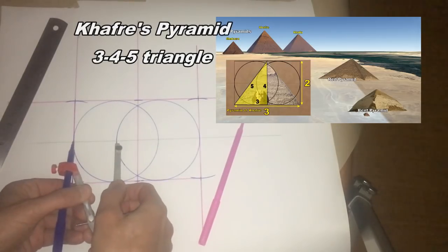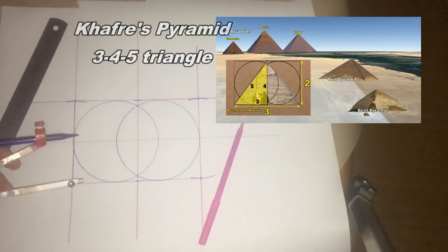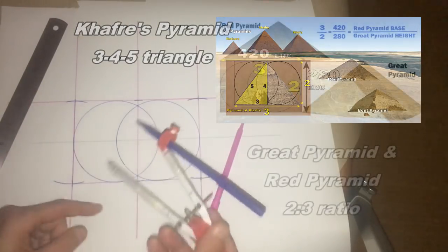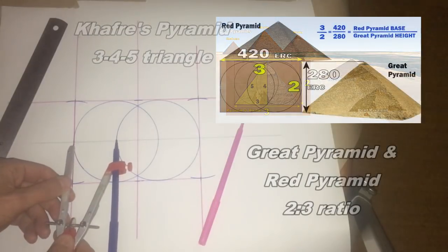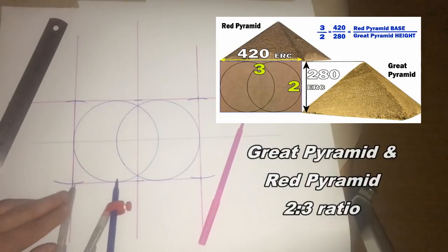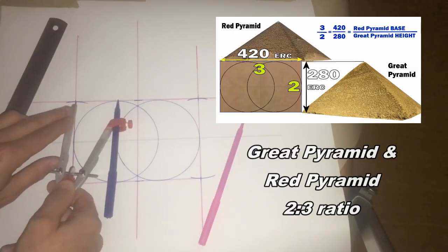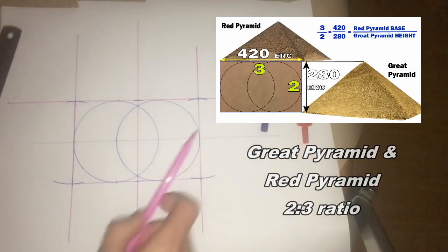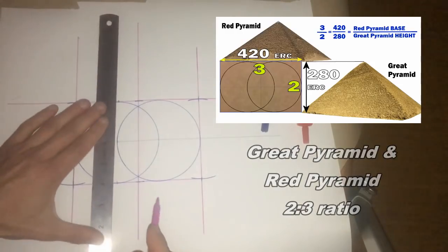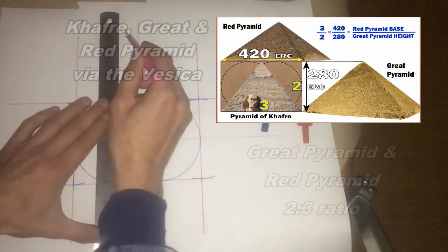If I set my compass back to the original setting—so the vesica is 1 to 3 wide—1, 2, we have what we need. So just go back to the original setting from the edge. Now that line, that mark should be exactly there. So therefore now we have the beginnings of the king's chamber. We have the floor plan already laid out for us.